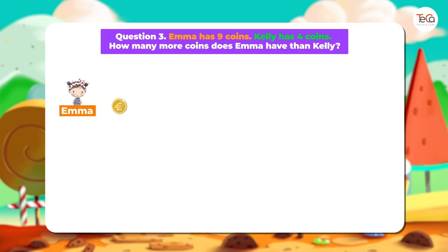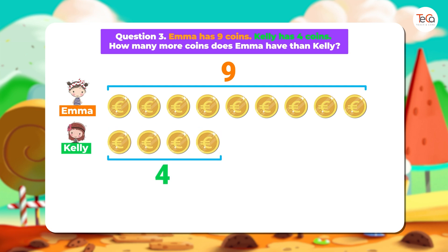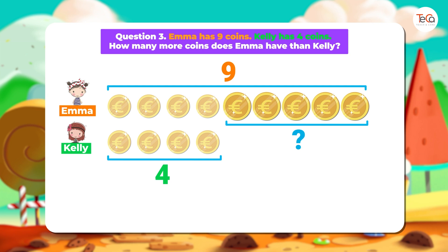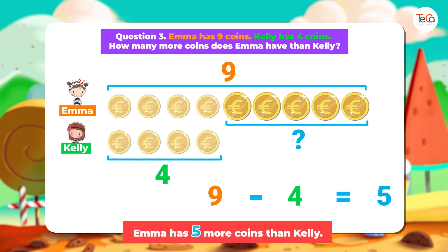Emma has 9 coins. Kelly has 4 coins. So Emma has more coins than Kelly. This is the number of more coins Emma has than Kelly. We subtract 4 from 9 to find the number of more coins Emma has than Kelly. Here, 9 minus 4 equals 5. We answer: Emma has 5 more coins than Kelly.